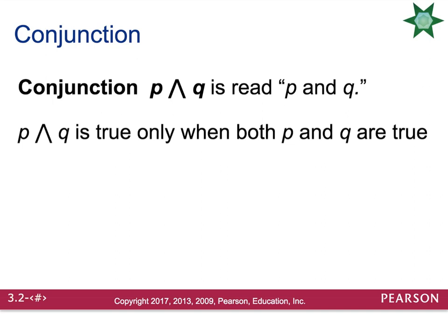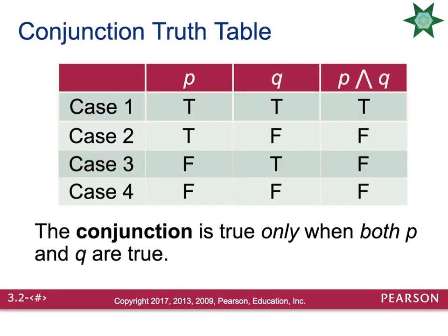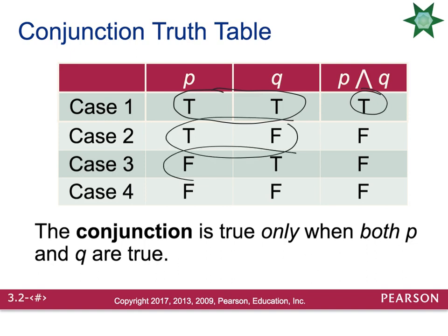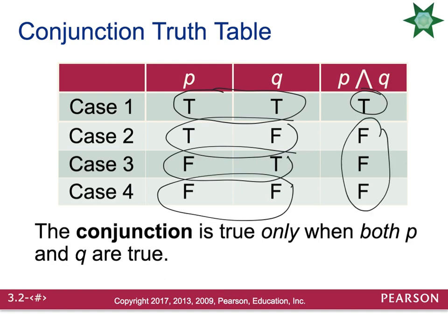Remember that conjunction — P and Q — is only true when both P and Q are true. So the conjunction truth table looks like this: Case one, if both statements are true, then the conjunction is true. But in any other scenario — if the second statement is false, if the first statement is false, or if both statements are false — the conjunction of the two statements will be false.